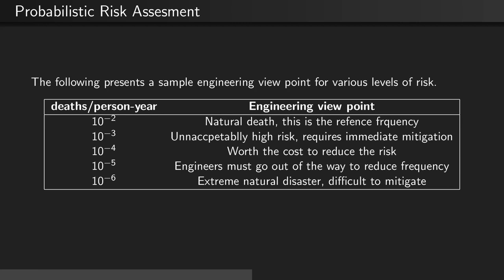The following presents a sample engineering viewpoint for various levels of risk. At 10 to the negative 2 deaths per person year, this is equivalent to natural death, and so any engineered system should have a significantly lower death rate. At 10 to the negative 3 deaths per person year, any engineered system should consider this an unacceptably high risk and would require immediate mitigation. At 10 to the negative 4, it is still worth the cost to reduce the risk even further. At 10 to the negative 5, engineers and engineered systems must go out of the way to reduce the frequency. At 10 to the negative 6, this is the level of extreme natural disasters and is quite difficult to mitigate.